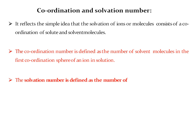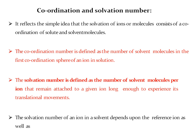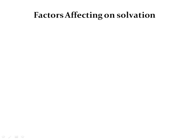The solvation number is defined as the number of solvent molecules per ion that remain attached to a given ion long enough to experience its translational movements. The solvation number is defined as well as the method of measurement. The smaller the anion or cation, the greater its solvation and the greater its solvation number and solvation energy, and greater will be the solvation process.